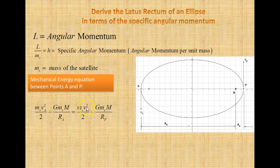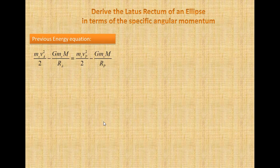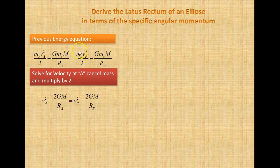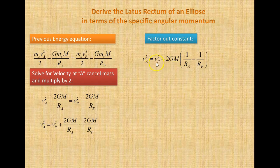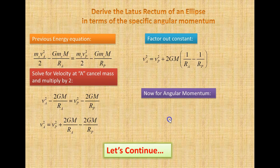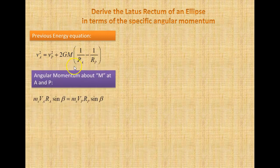That's equal to the mass of the satellite times velocity at periapsis squared divided by 2, minus G times the mass of the satellite times the mass we're orbiting, divided by the distance Rp. We then cancel mass and multiply by 2 on both sides, giving us VA squared equal to VP squared plus 2G times M times (1/Ra minus 1/Rp).